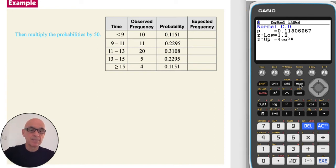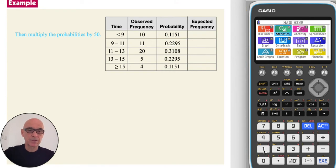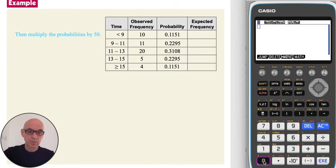So we go to the main menu, choose Run Matrix and type in the first probability, 0.1151, multiply by 50 and rounding to a whole number. So that's approximately 6 children.